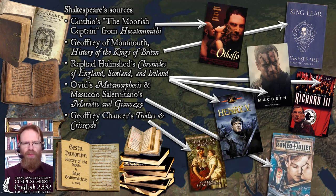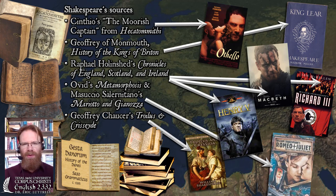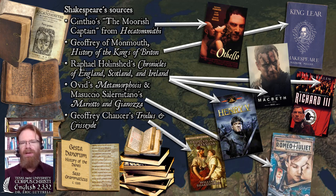For instance, Othello was modeled on the Italian writer Cinthio's story The Moorish Captain. Shakespeare's history plays like Henry the Fifth and Richard the Third follow almost point by point from a book called Chronicles of England, Scotland, and Ireland by Raphael Holinshed. The general plot of King Lear can be read in Geoffrey of Monmouth's History of the Kings of Britain, although it doesn't end quite so badly in the original version.